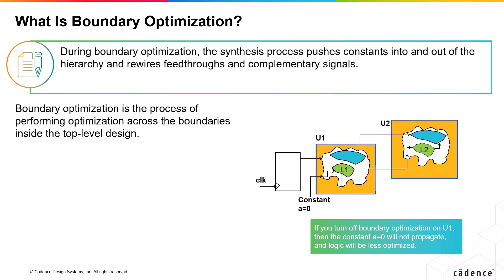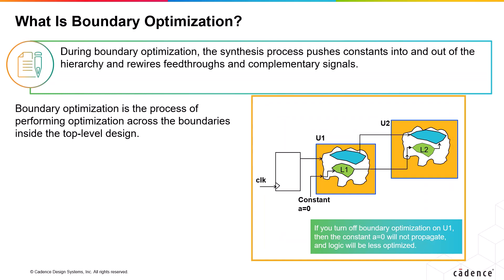In the given example, if you turn off boundary optimization on U1, then the constant A, which equals 0 here, will not propagate, and logic will be less optimized.